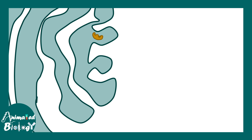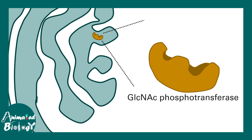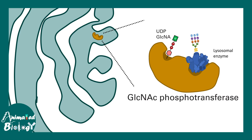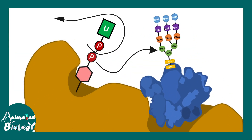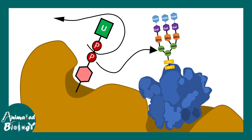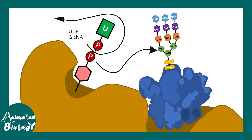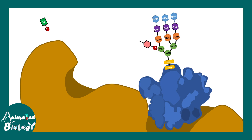At the trans-Golgi, there are specific enzymes known as N-acetylglucosamine phosphotransferase. These enzymes can transfer a phosphorylated glucosamine residue onto the lysosomal enzyme, which is already N-linked glycosylated. There are two different binding sites: UDP and N-acetylglucosamine bind to one pocket, and the nascent lysosomal protein binds to another pocket. The UDP then leaves, and N-acetylglucosamine phosphate is attached to the mannose residue.